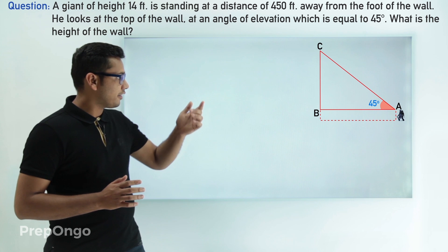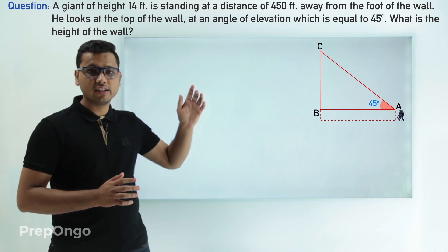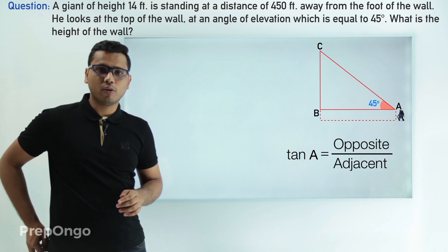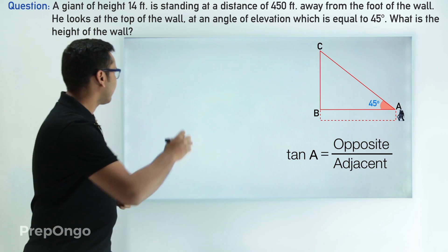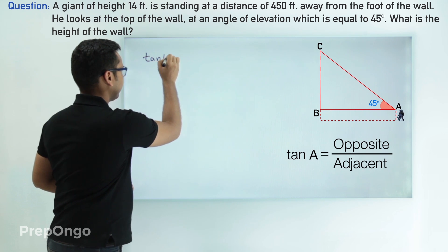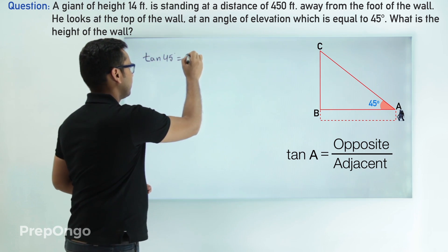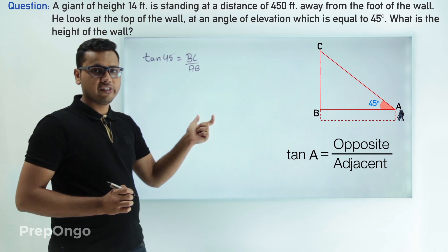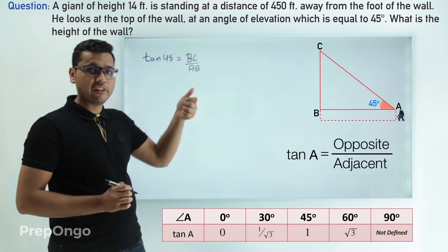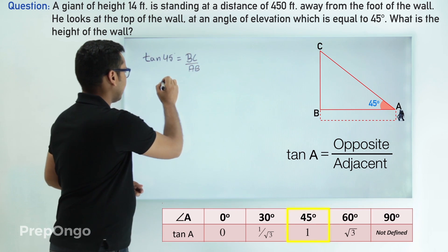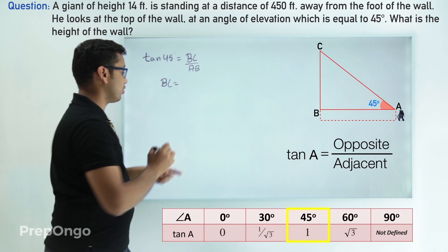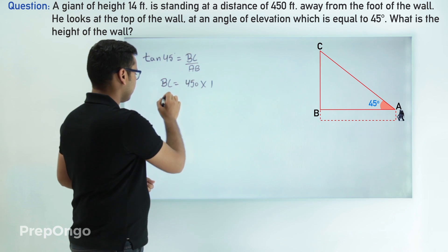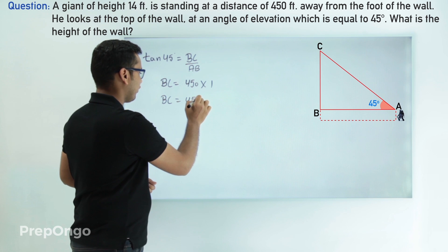In triangle ABC, we are given the value of the adjacent side and we have to find the value of the opposite side, and this angle is given to us. So we can apply tan here — tan is opposite upon adjacent — and we can get the value of opposite. So let's apply it. We write tan of 45 degrees equals BC upon AB. We know AB is 450 feet. The value of tan 45 from the table is 1. Cross-multiplying, BC equals 1 times 450.